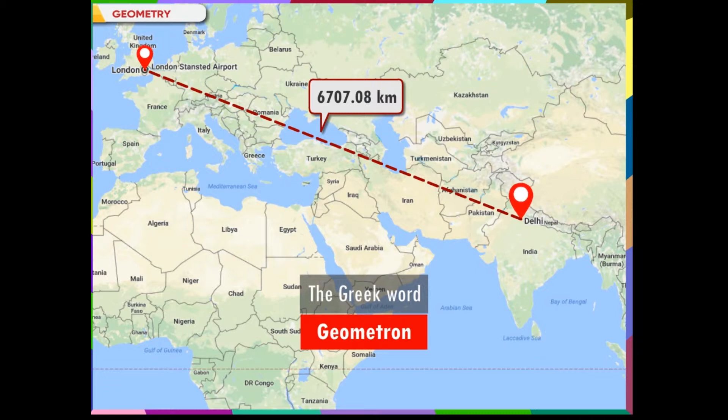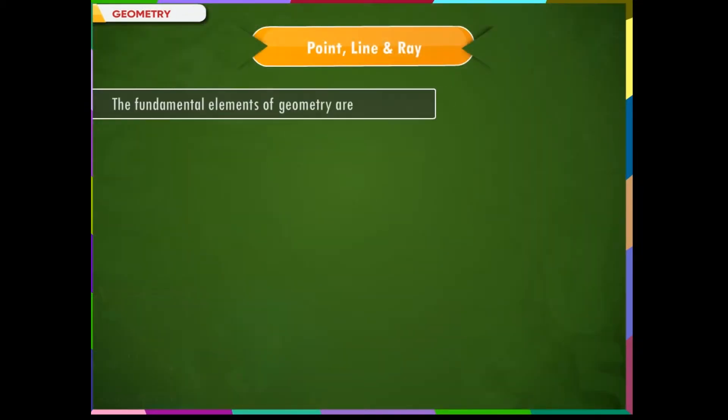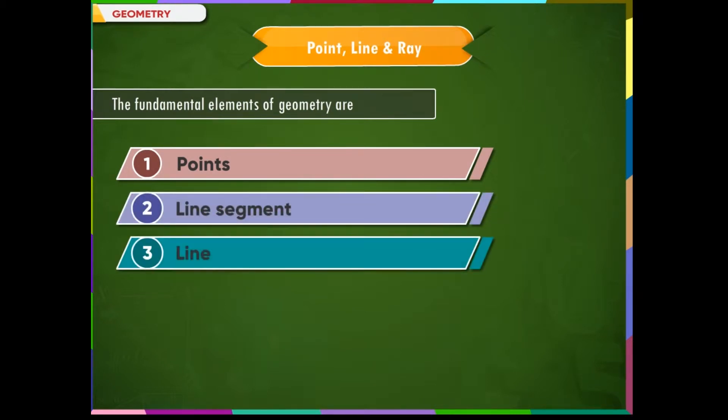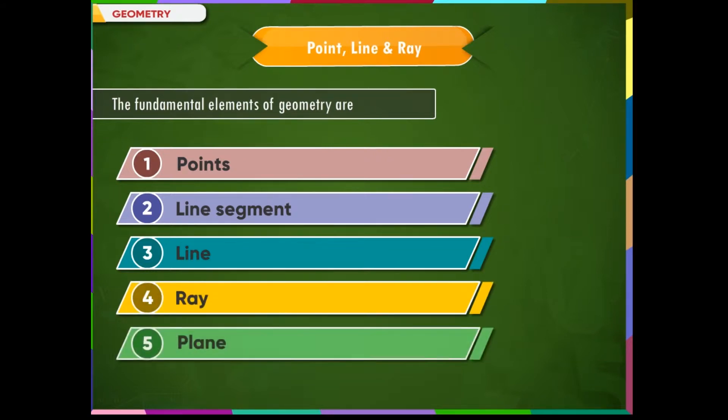The fundamental elements of geometry are: 1. Point, 2. Line segment, 3. Line, 4. Ray, and 5. Plane.